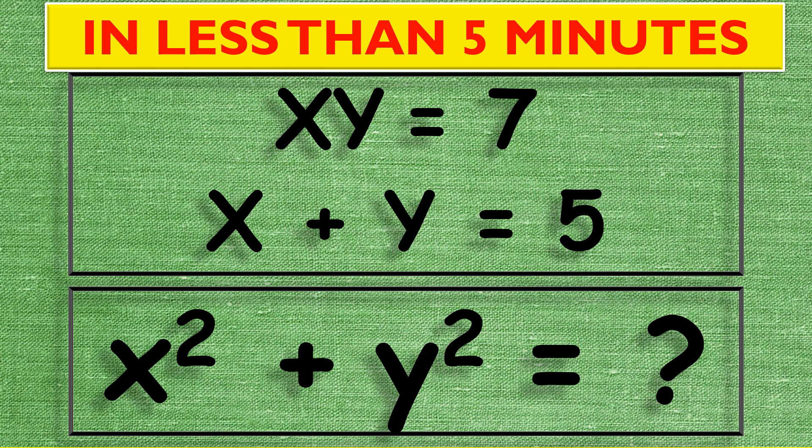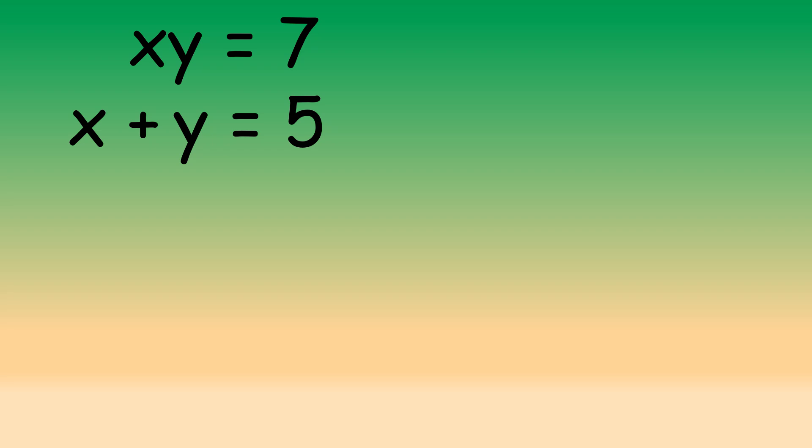Today we'll be solving for x squared plus y squared, given that xy equals 7 and x plus y equals 5. We'll be doing that in less than five minutes — that is, you and I — and our time starts now. So we have xy equals 7, that is to say x times y equals 7, and also x plus y equals 5.